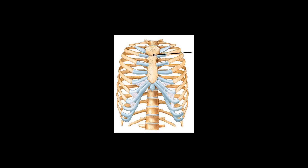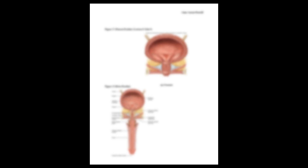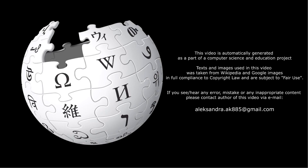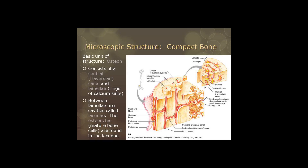The angle also marks a number of other features: the carina of the trachea is deep to the sternal angle; passage of the thoracic duct from right to left behind the esophagus; the ligamentum arteriosum; and the loop of the left recurrent laryngeal nerve around the aortic arch.